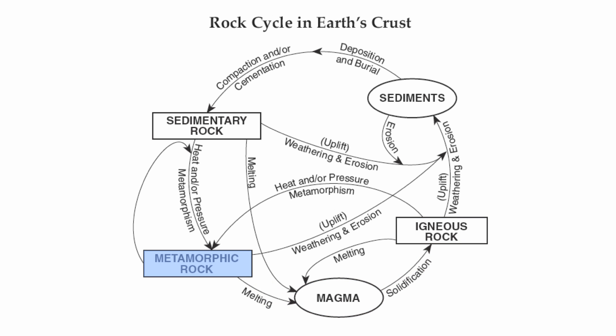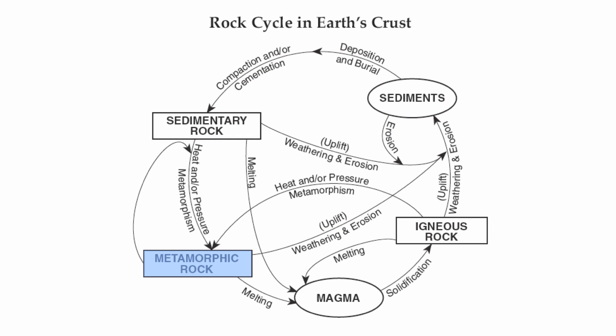Metamorphic rocks can also become sedimentary because they can get uplifted, weathered, and eroded into sediments. Those sediments can be further eroded into even smaller sediments, then deposited, buried, compacted, and cemented into sedimentary rock. And metamorphic rock can become itself — by undergoing more heat and pressure, different stages of metamorphism can take place.